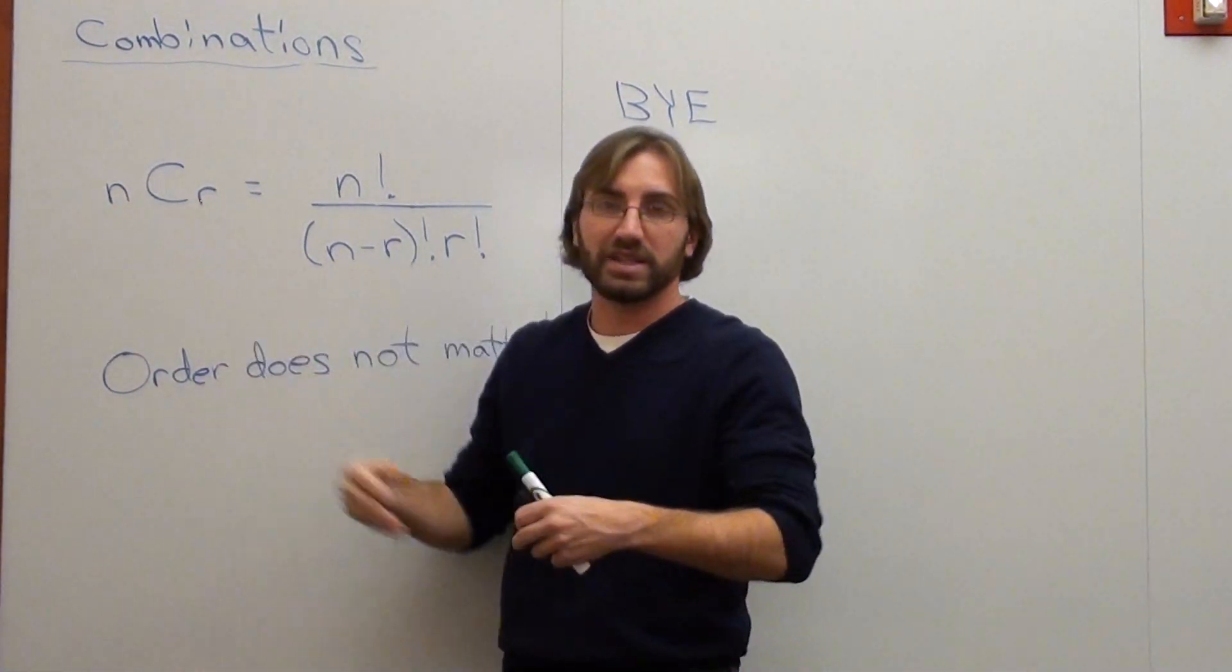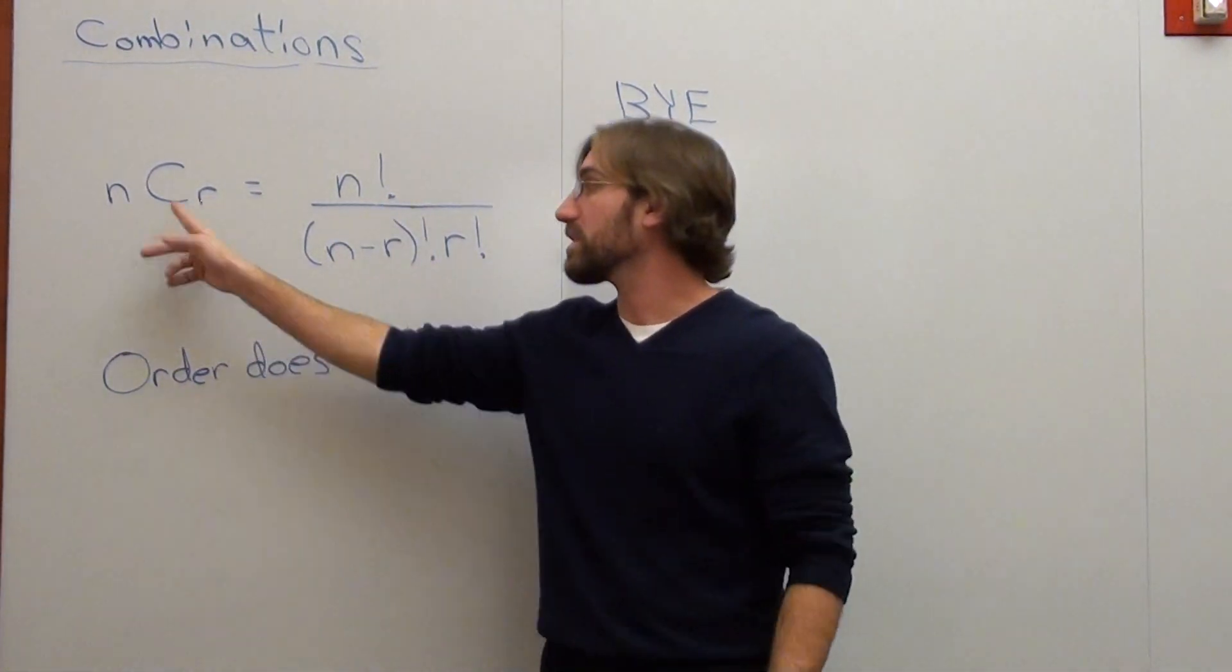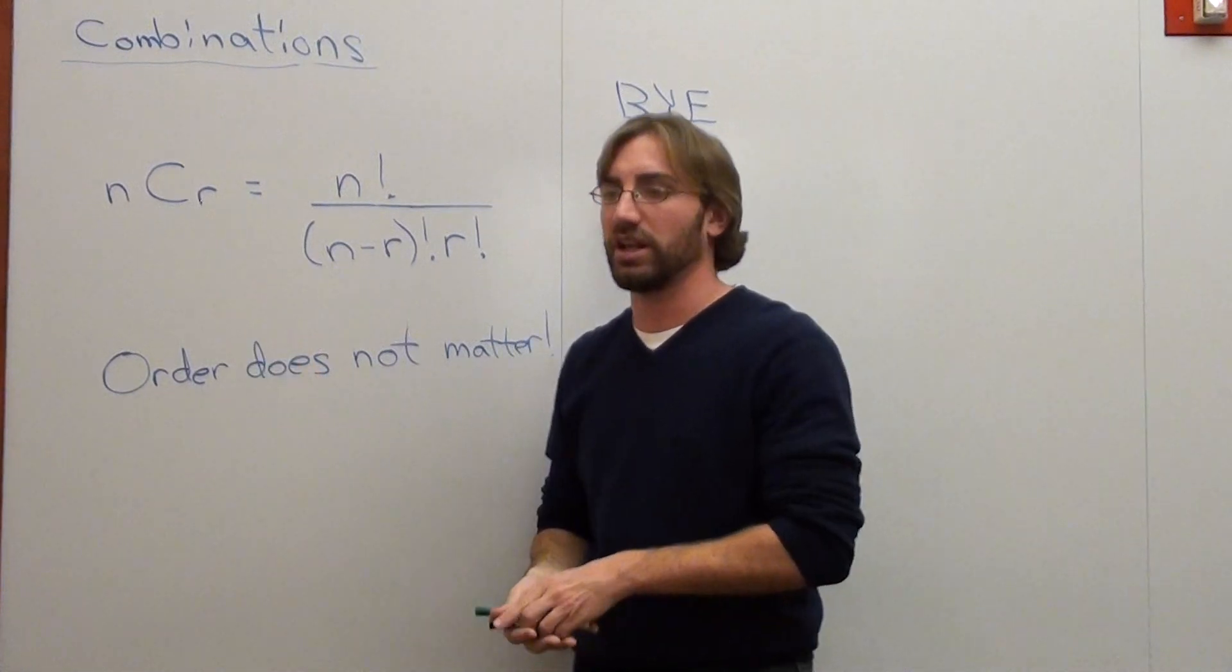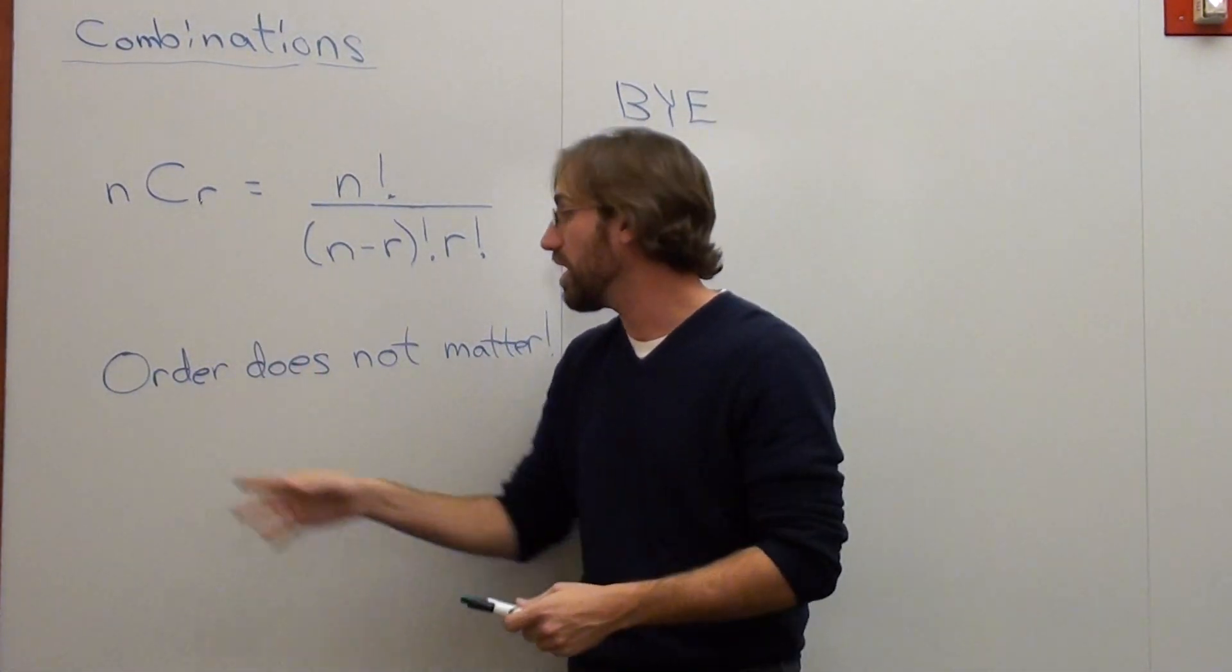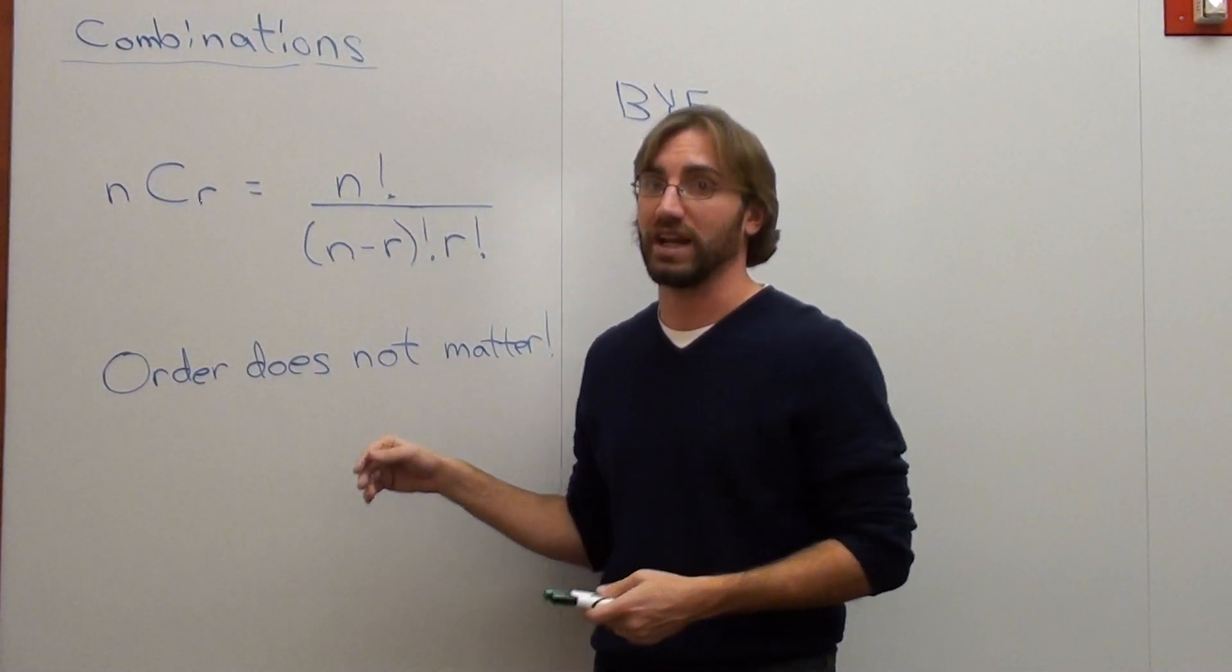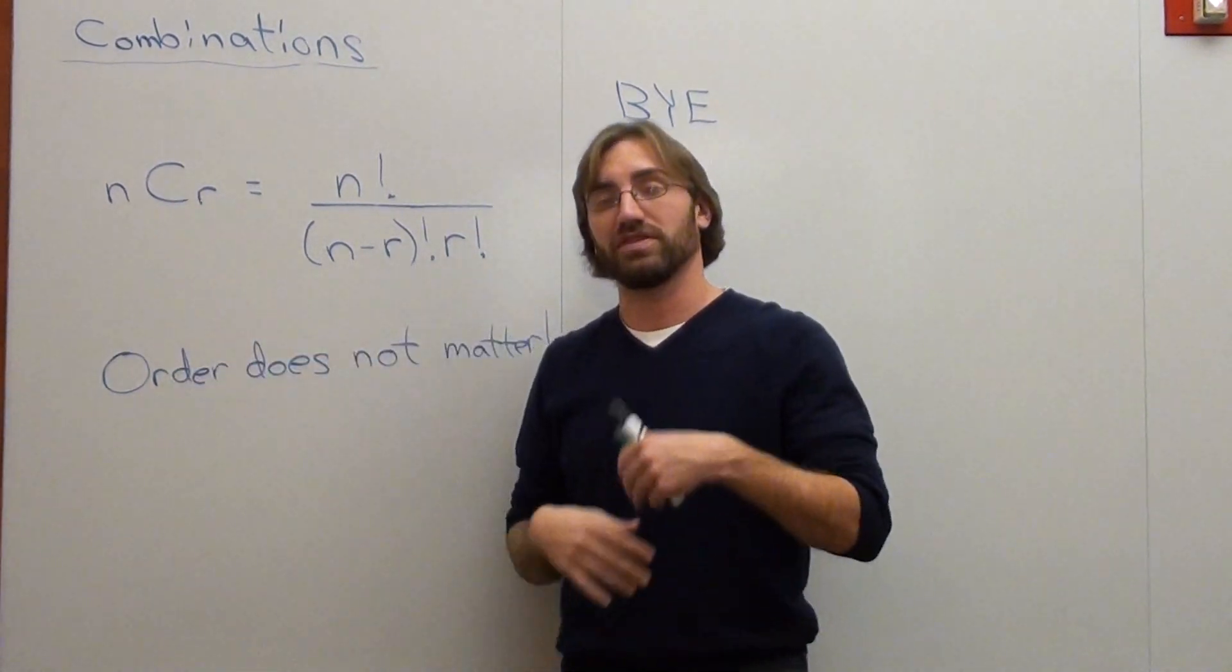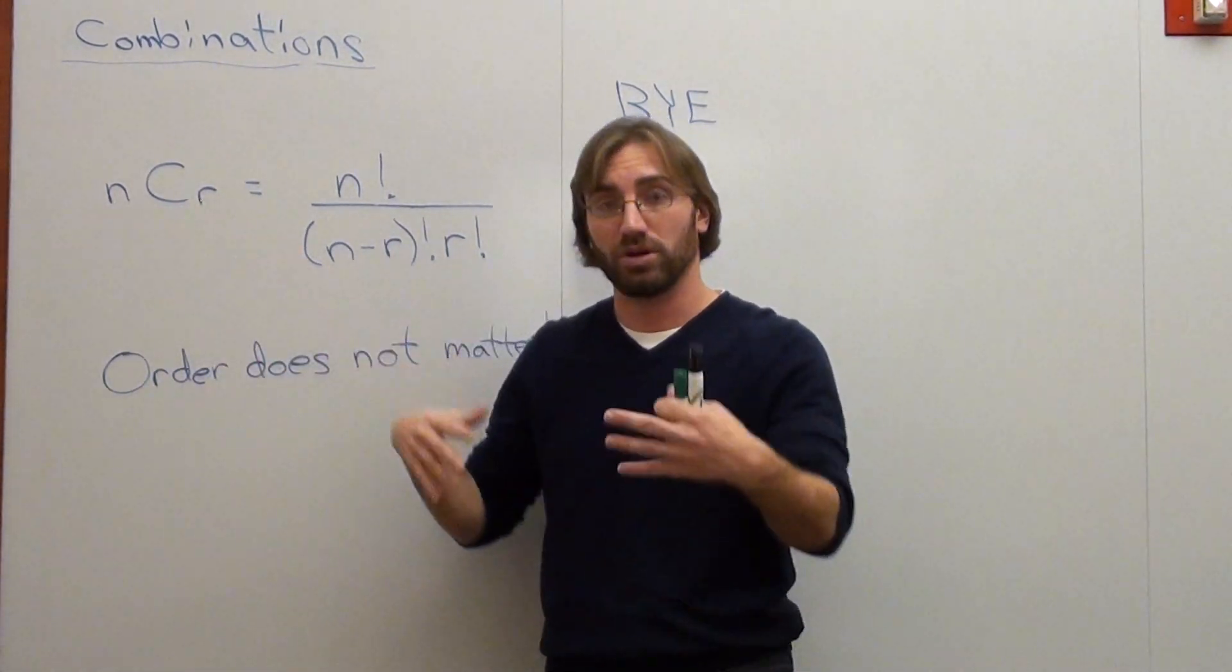The formula is N where N stands for the total that you're working with. C stands for combination. And you know it's a combination or a permutation based on whether order matters or does not. If it's something where order does not matter, it's a combination. If it's something where order matters, it's going to be a permutation.